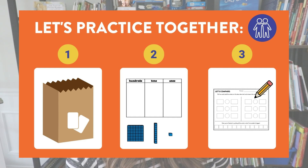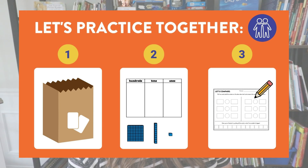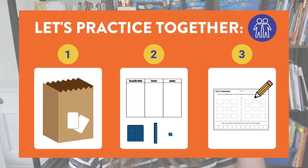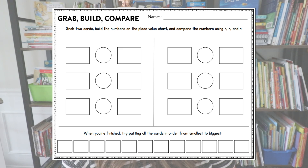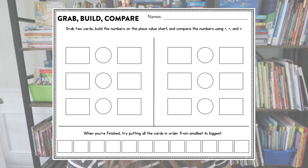Each student also had a place value board — a hundreds, tens, and ones chart — and a bag full of base 10 blocks. They had to each build the number they pulled. Once they built the number, the last step was to compare the numbers. Here's a close-up of what that practice sheet actually looked like: each student would write their own number in the box. They had to talk together to determine which was bigger and which was smaller and draw the greater than or less than sign. Then they'd keep the cards and pull two more.